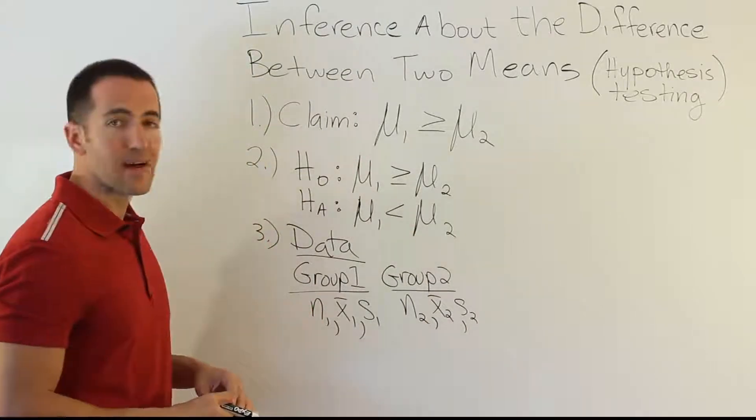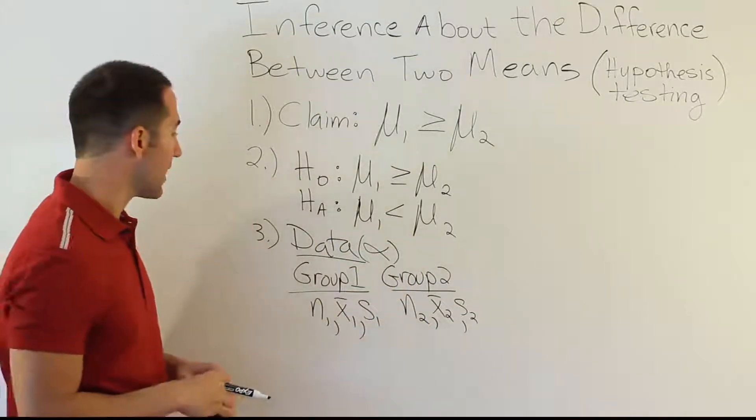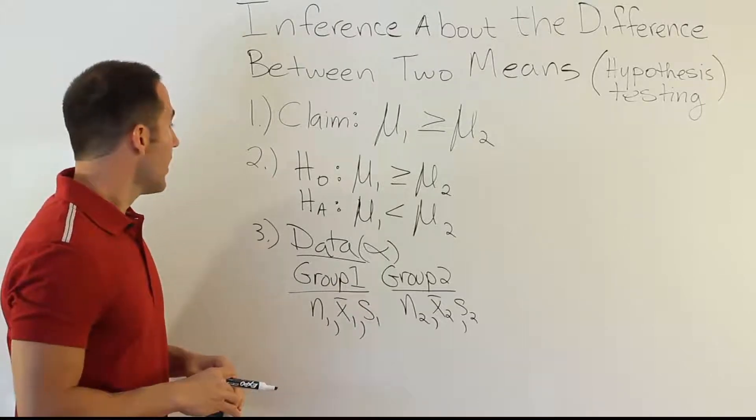And then, of course, we often have a significance level alpha, so that'll be given in the problem as well. So those are usually the items we get, so usually about seven items come in the data step. You can find those in the problem.